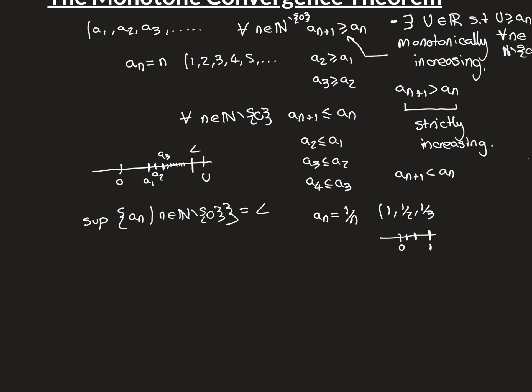Let's prove that the sequence converges to L using the epsilon definition of the limit. We need to show that the terms get and stay indefinitely close to L, the supremum. Let epsilon be greater than zero. Consider the epsilon-interval around L: from L minus epsilon to L plus epsilon. We need to find a big N such that from that term onwards, all terms are inside that epsilon interval.